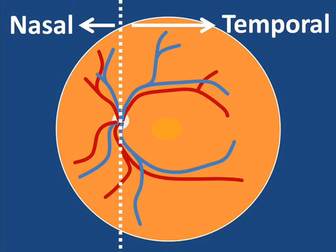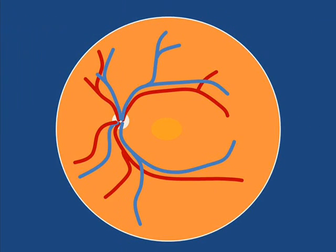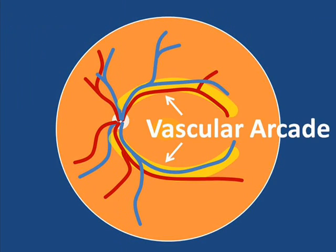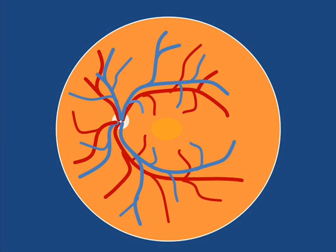So, for example, this would be the superior temporal artery. The term vascular arcade refers to the vessels which form an arc around the central part of the retina. These major vessels, in real life, branch into progressively smaller vessels which reach into almost all areas of the retina.